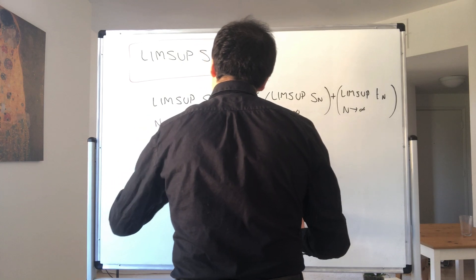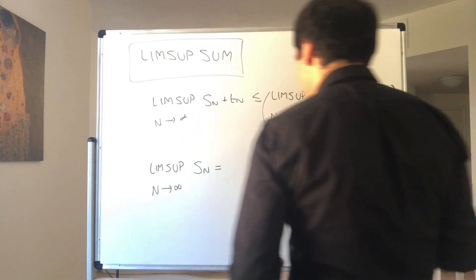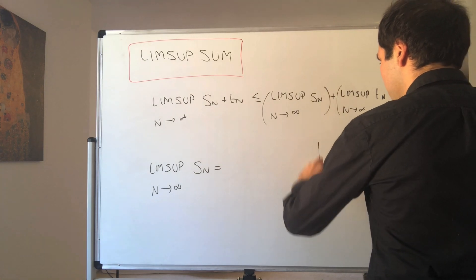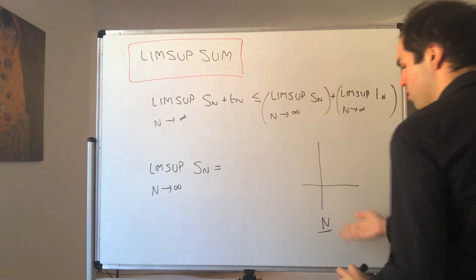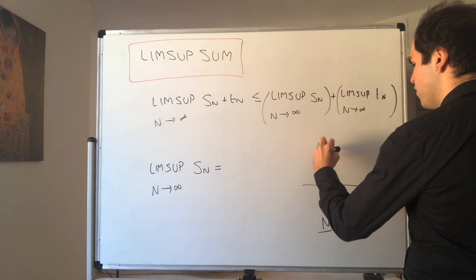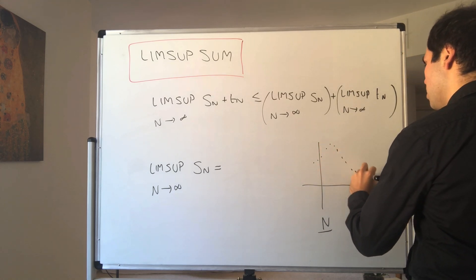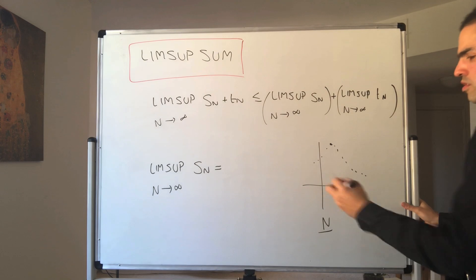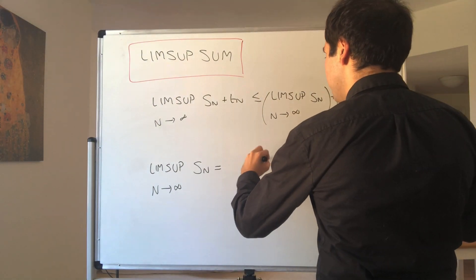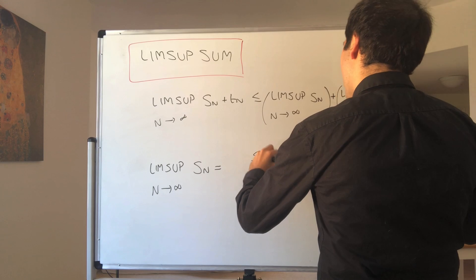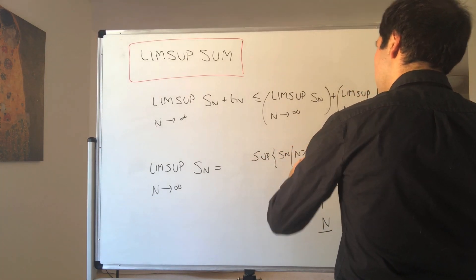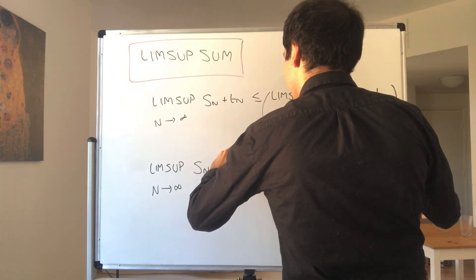The lim sup of Sn is essentially the sup of Sn but after a long time. So after some very large threshold, you consider the sup of this, and you let capital N go to infinity. It's essentially the supremum of Sn after capital N, and you let capital N go to infinity.